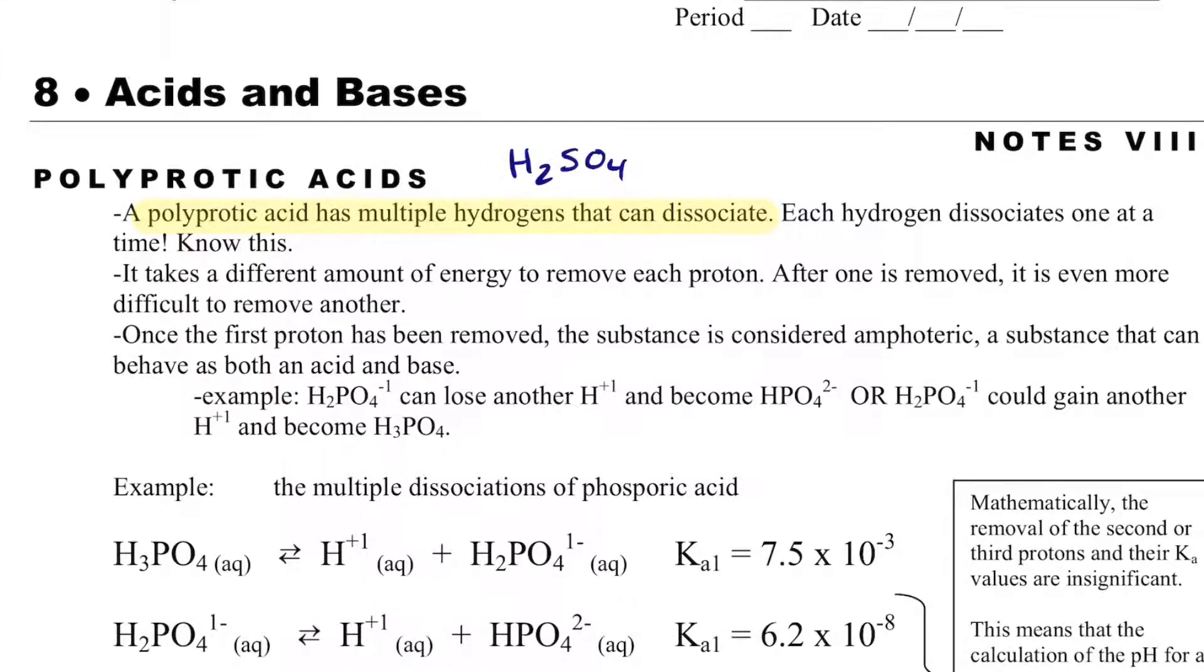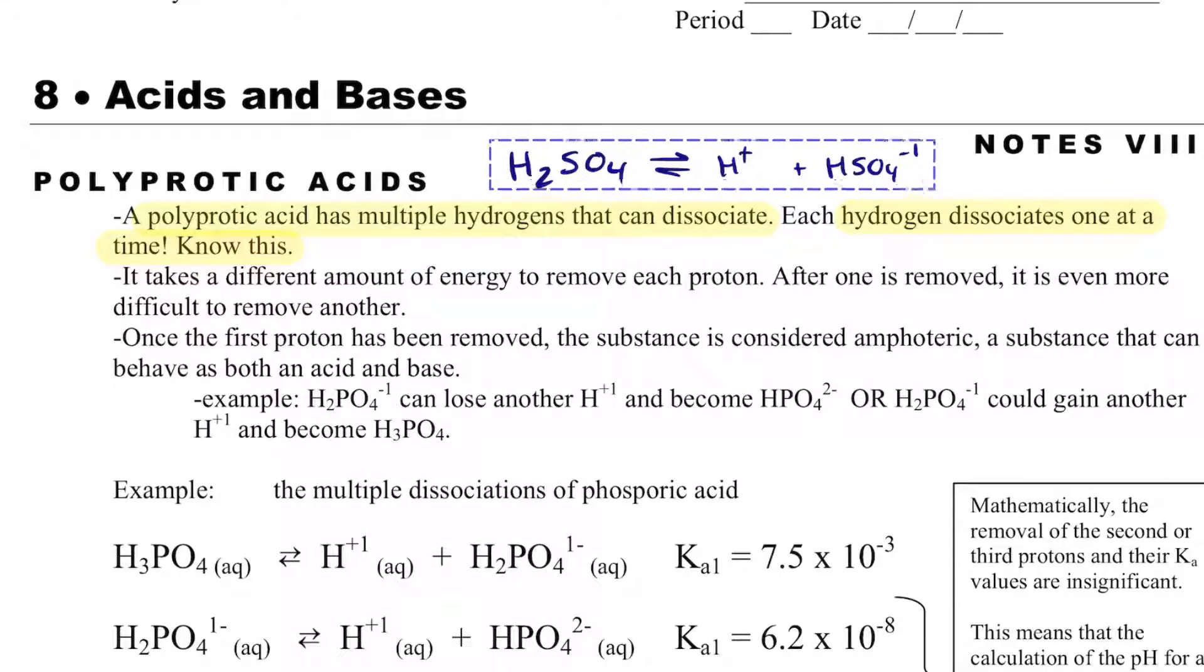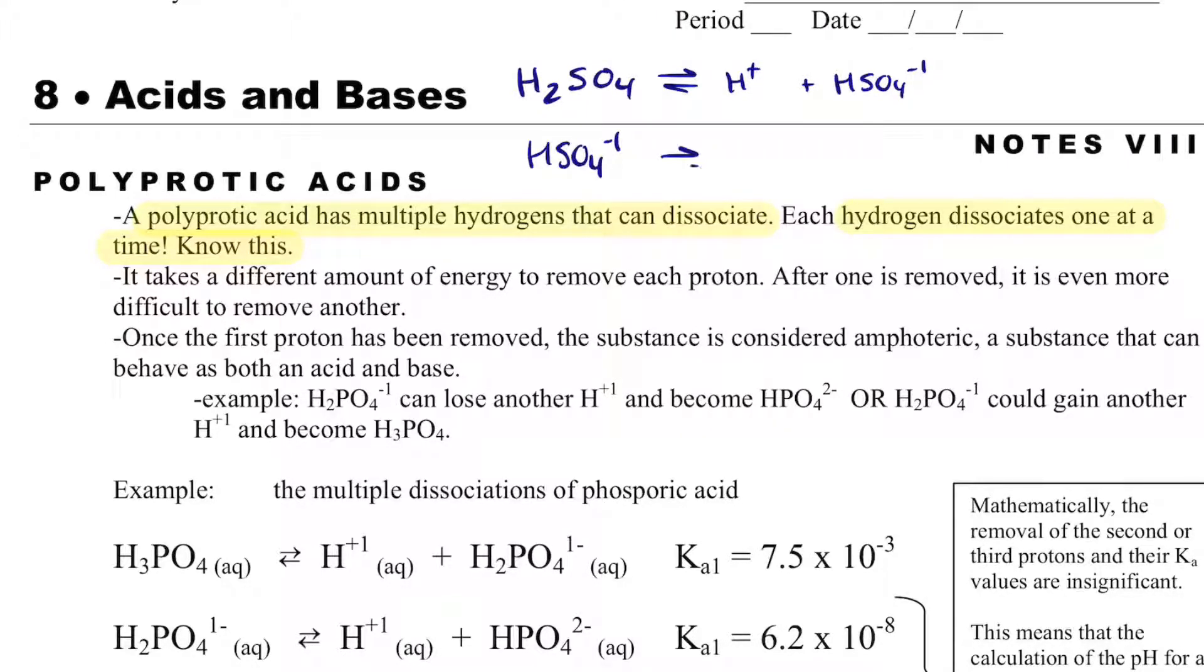But the key is that each hydrogen dissociates one at a time, and it's important to know that. So this will first break apart and give me one H+, and whatever is left over, that'll be HSO4 minus one charge. And then HSO4 can dissociate into H+ plus SO4 2-, and what's important is I get a Ka for both of them. We could call this Ka1 because that was the first hydrogen that was dissociated, and then we could call this Ka2 because this was the second hydrogen that was dissociated.